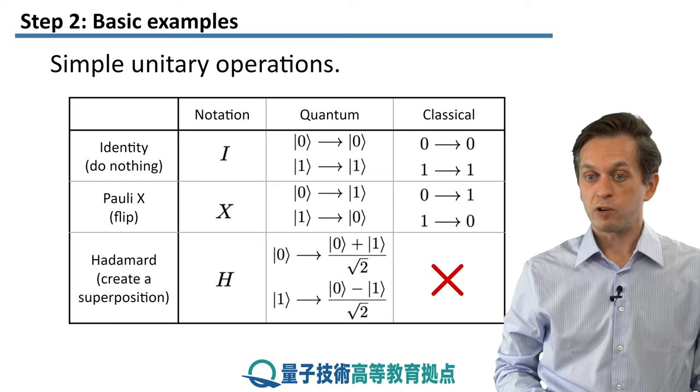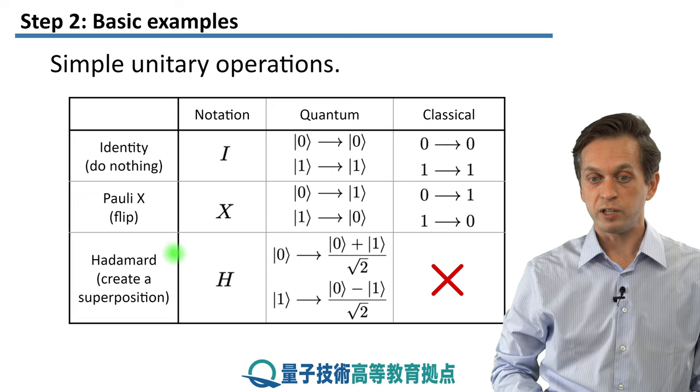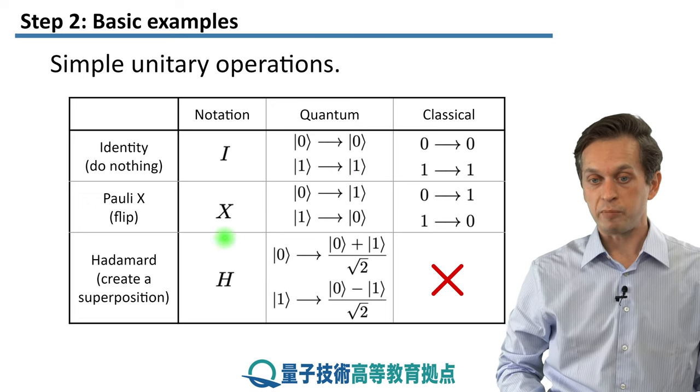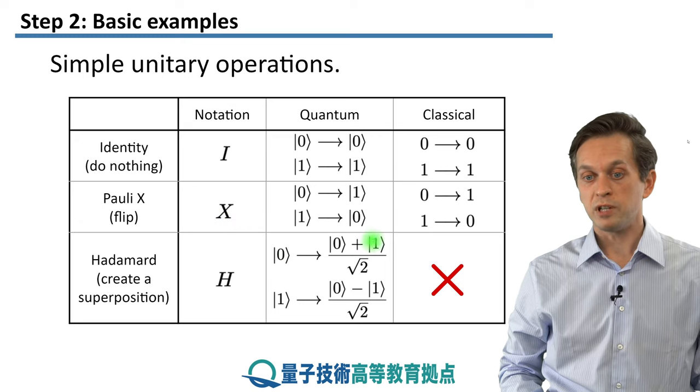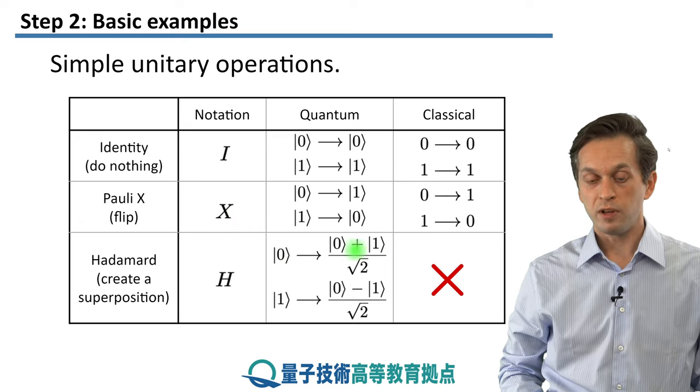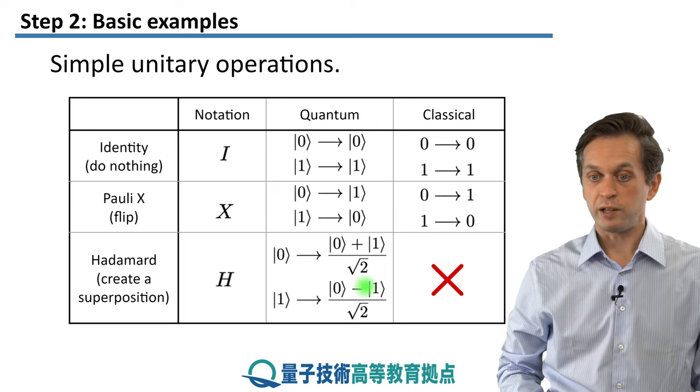We can also create superpositions. This is known as the Hadamard operation, denoted by capital H. It takes as input the ket 0 and it outputs an equal superposition of 0 plus 1. Or it can take the input ket 1 and output 0 minus 1.